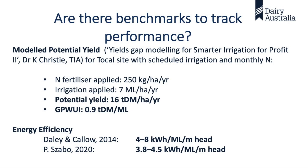As part of the project, the Tasmanian Institute of Agriculture did some modelled potential yield. Using historical weather data and assumed conditions — 250 kg/ha/year of fertiliser applied monthly, and an irrigation application of 7 megalitres per year based on average rainfall — the modelled potential yield here is 16 tonnes of dry matter per hectare per year. We measured 2.9 tonnes in two months, so we're approximately on track if that rate were maintained across the year. The modelled gross production water use index is about 0.9 t DM/ML, compared to our measured 0.71 t DM/ML.